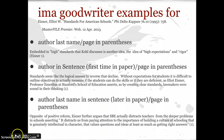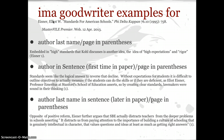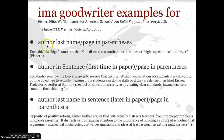So here's an example from Eisner. One of IMA's example works cited entries is right here, and you'll see that the first word is Eisner. Therefore, every time you reference this source in the parentheses — if you don't state it earlier in the sentence — it needs to be in the parenthetical entry. The first method is author last name and page in parentheses.